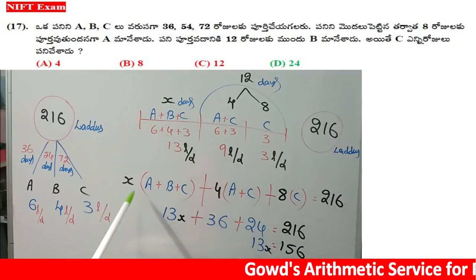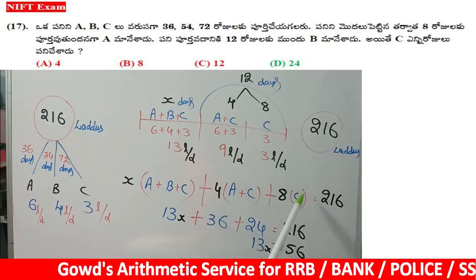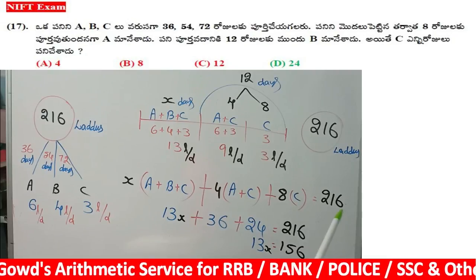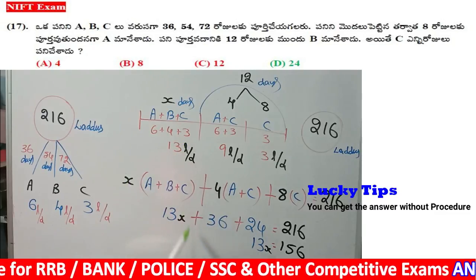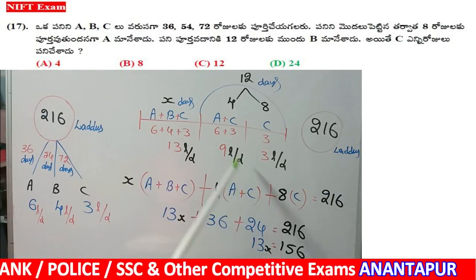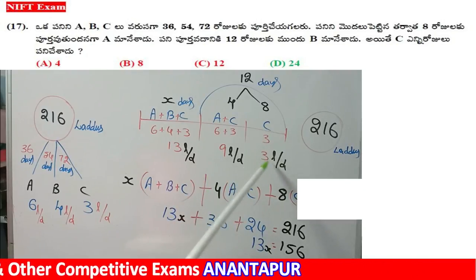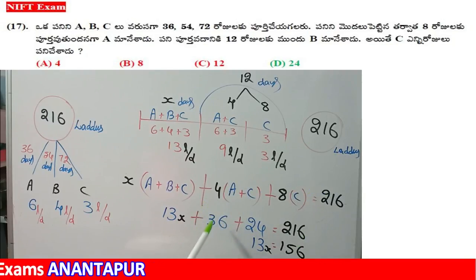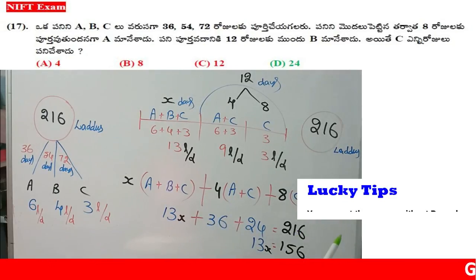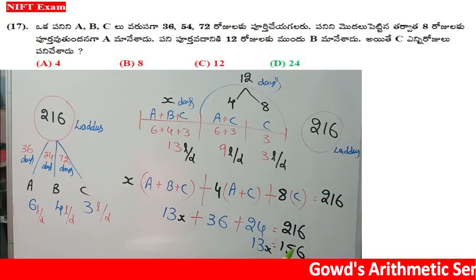X times (A plus B plus C) — so X into 13 = 13X. Plus 4 into (A plus C) — A plus C is 9 laddus — so 4 into 9 = 36. Plus 8 into C — C is 3 laddus — so 8 into 3 = 24. This equals 216. 36 plus 24 = 60. So 13X = 156.